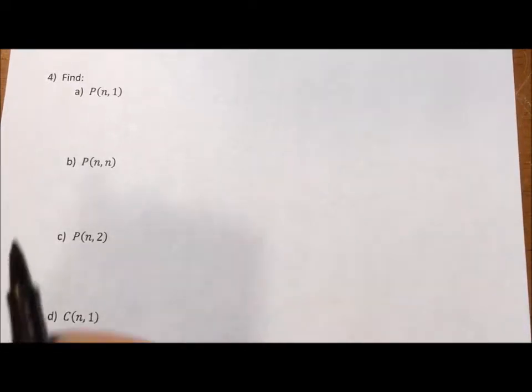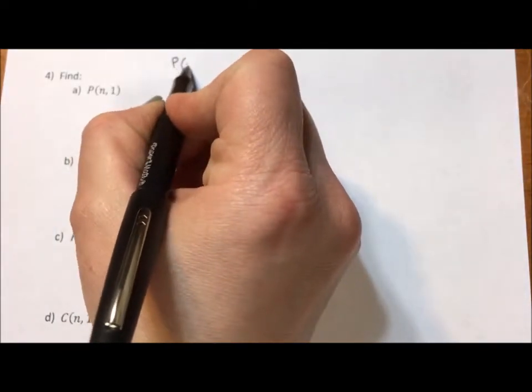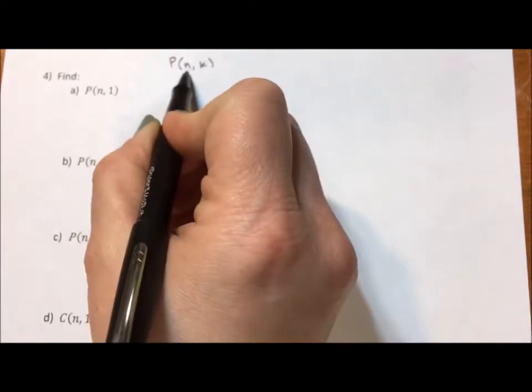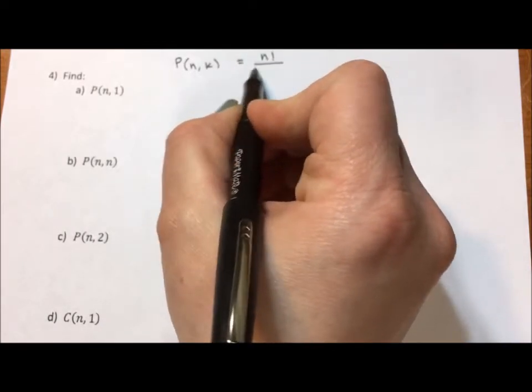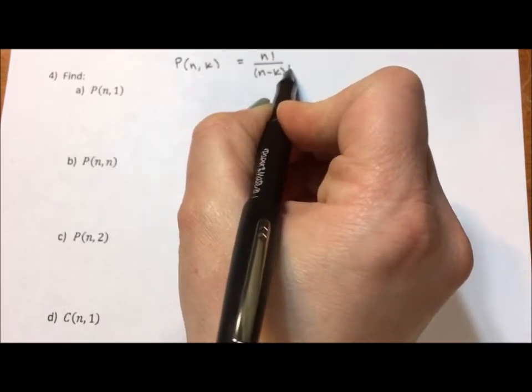It says find the permutation of n,1. Well, permutation is defined, so if I have P of n,k, that's n items taken k at a time. This is n factorial over n minus k factorial.